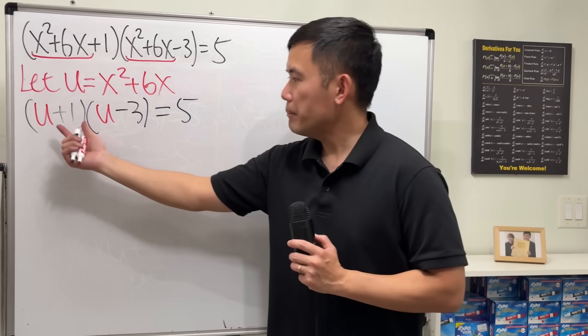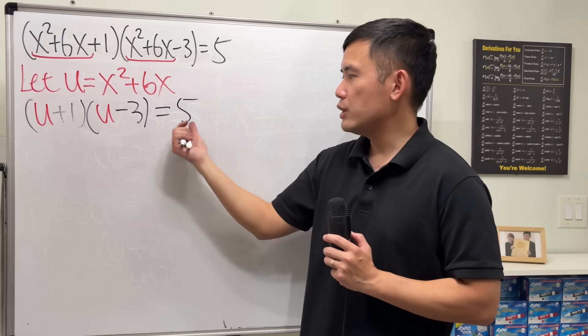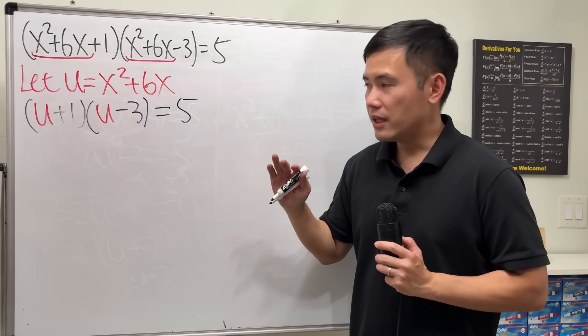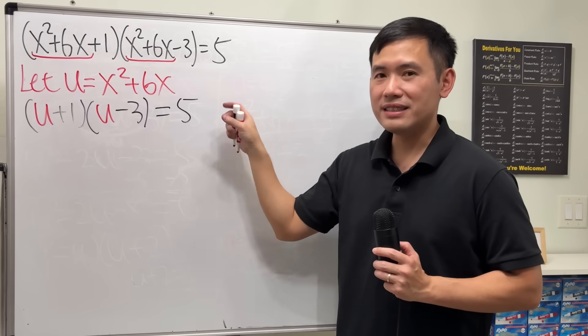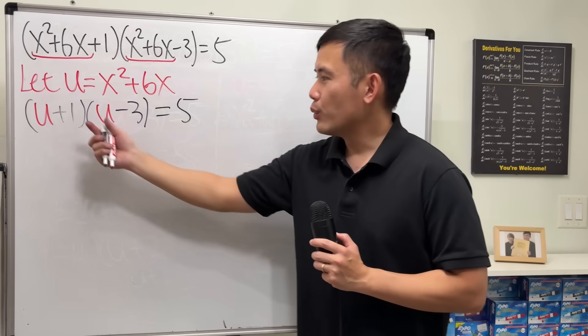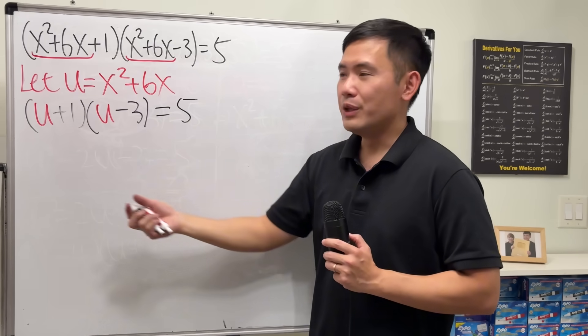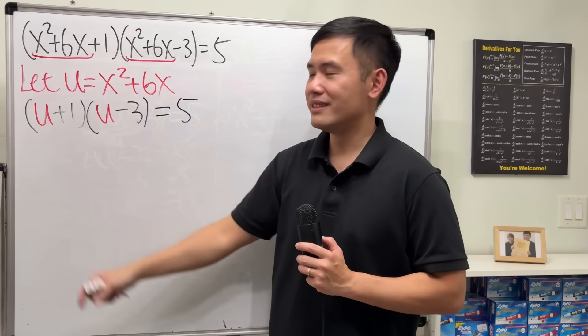Here though, do not make this equal 5, do not make this equal 5 and solve, because this is a 5. You can only do that when the right hand side is equal to 0. When two numbers multiply to be 5, you don't know what the first number is.